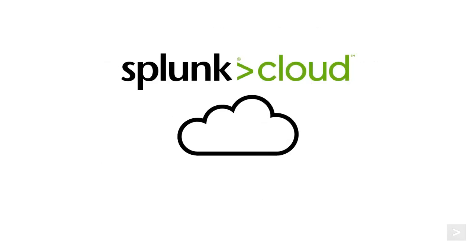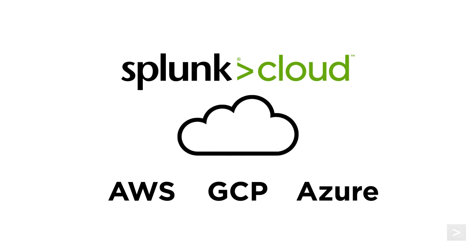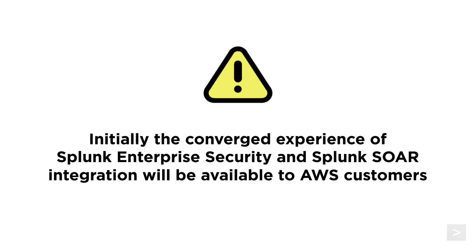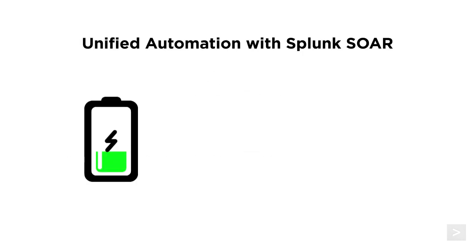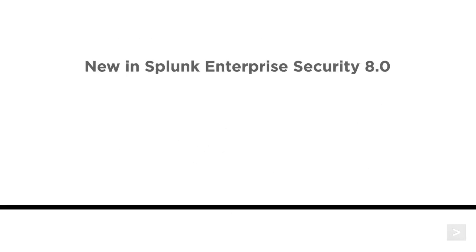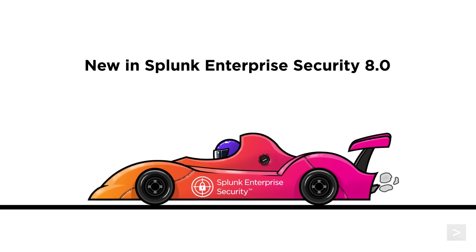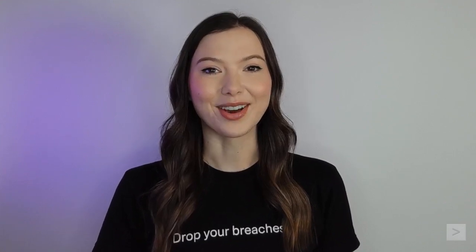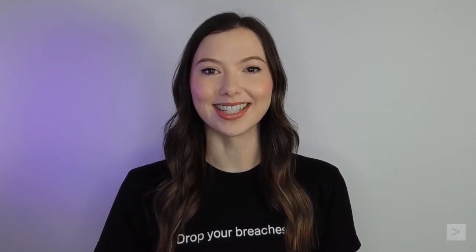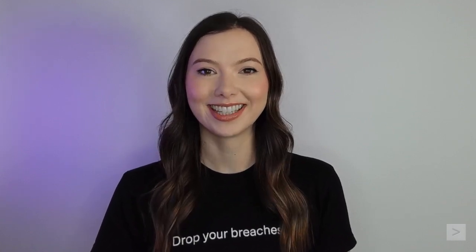Splunk Enterprise Security 8.0 will be available on Splunk Cloud for GCP, AWS, and Azure, as well as CMP on-premises. Cloud customers will need to opt in for upgrades. Initially, the converged experience of Splunk Enterprise Security and Splunk SOAR integration will be available to AWS customers. The unified automation with Splunk SOAR reduces manual workflow fatigue and lack of orchestration and scalability. Be sure to explore these features and more to see how they can enhance your organization's security posture. Stay on the lookout for additional Enterprise Security 8.0 release content coming soon to Splunk Lantern and our Splunk HowTo channel. Thanks for watching.